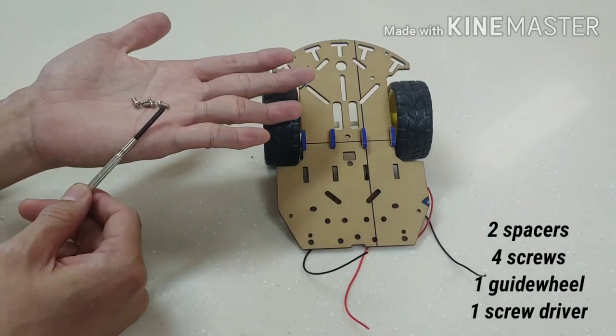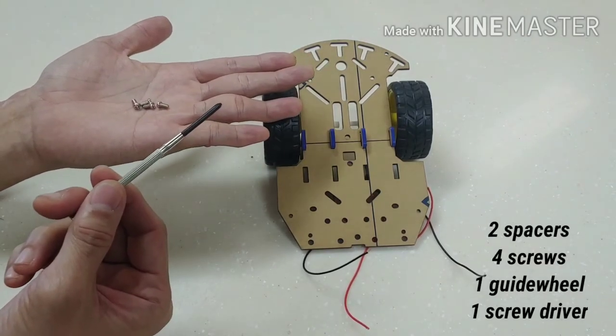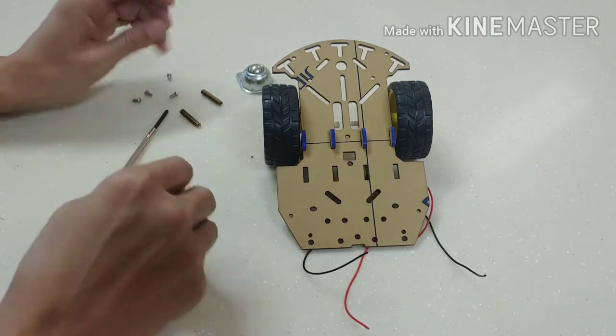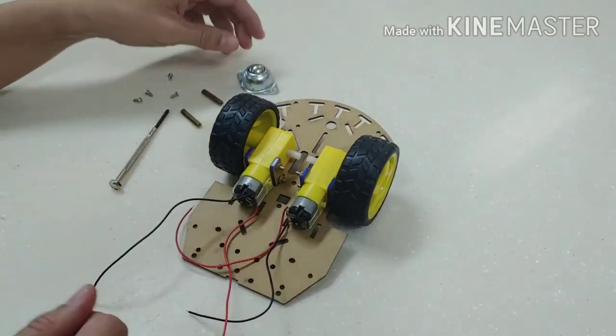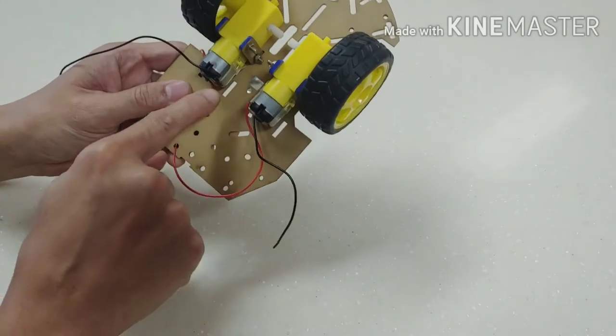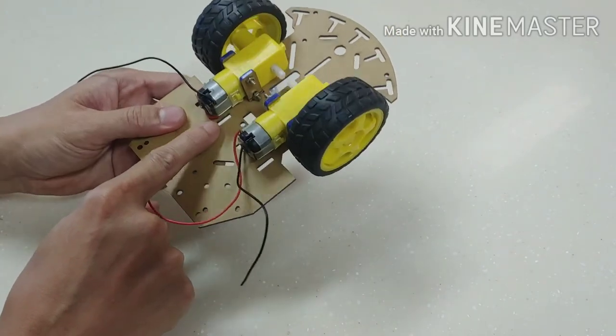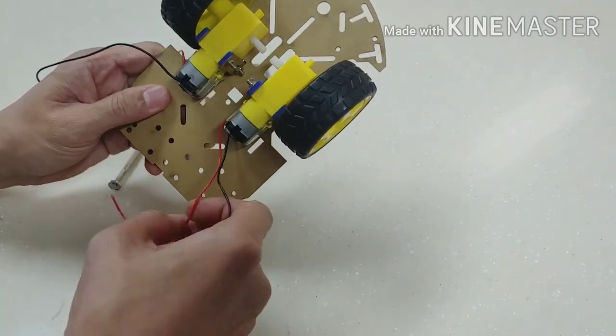And needless to say, when you have screws you will need a screwdriver. Okay, so this is what we're gonna do. First, flip it upside down. Now you'll see that there are two slots here right beside the motors.